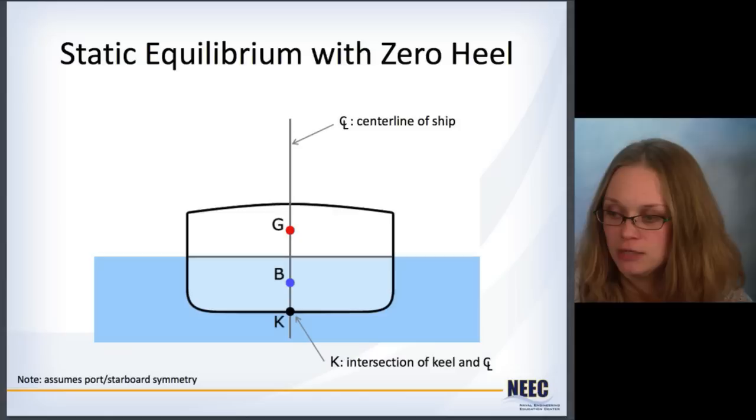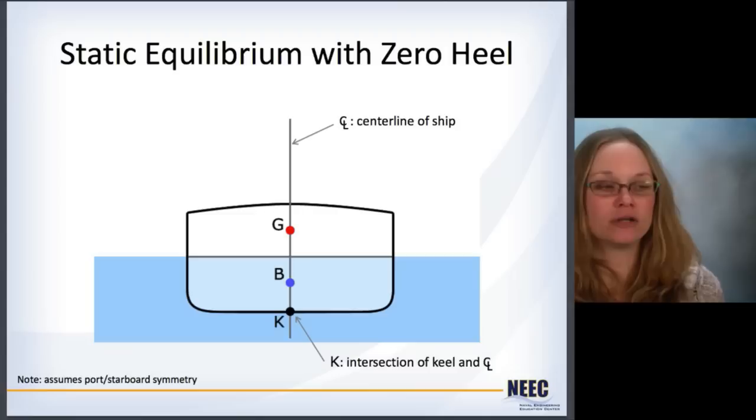For a ship here, okay, so going back, we have G and B when it's in static equilibrium, G and B will be aligned on the center line of the ship, almost always. Where the center line of the ship intersects the keel, we're going to call that a new point, K, because we'll use that in the next lecture. This assumes port and starboard symmetry with the ship, which is generally the case, so you're pretty safe there.